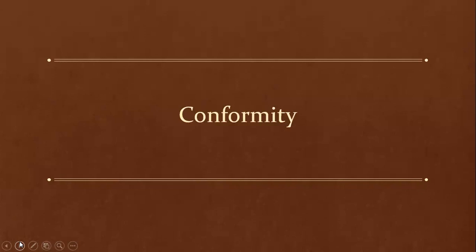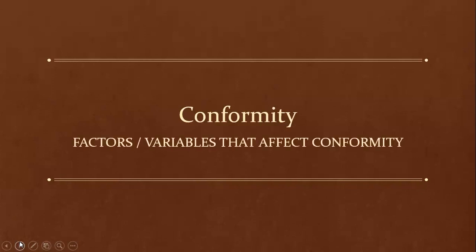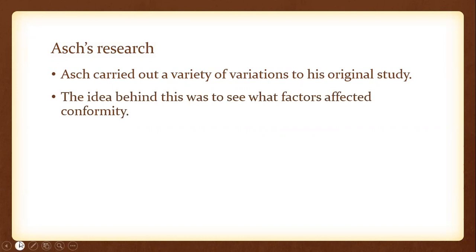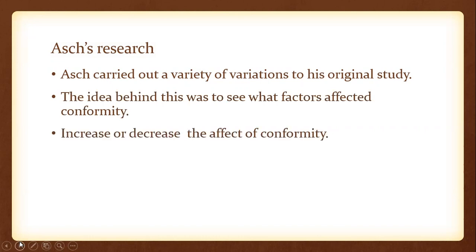This session is going to focus on different factors or variables that can affect the level of conformity from the majority view, and this is going to be based on Asch's variations. Asch carried out a variety of variations to his original study, which simply means that he would change one variable within his original study and carry it out again to see how it affected the levels of conformity — whether it had an increase or a decrease effect.